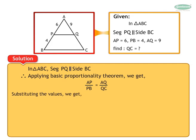Substituting the values of AP, PB, and AQ, we get 6 upon 4 is equal to 9 upon QC.